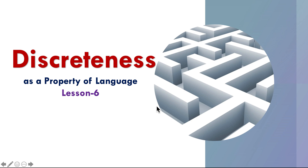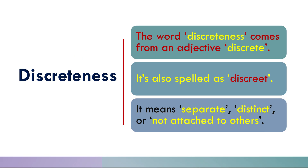Hello and welcome to the topic: discreteness as a property of language. Lesson six, or lecture six — discreteness. The word discreteness comes from the adjective 'discrete,' also spelled as 'discrete.'